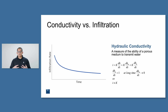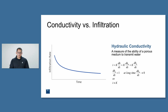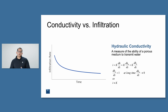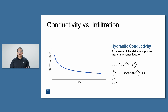Hydraulic conductivity is defined as a measure of the ability of a porous medium — in this case, typically soil — to transmit water. Ultimately, we use this infiltration curve and equations to calculate the hydraulic conductivity. We then put that into models to understand and model how water moves through soil. It is a consistent value because it's independent of all the other factors that impact the ability of soil to transmit or infiltrate water.